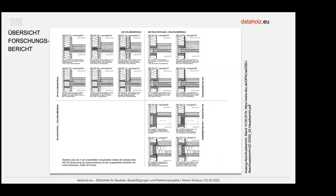Diese Übersicht ist im Forschungsbericht zu finden, mit den unterschiedlichen Quadranten. Unten steht zusammengefasst die Kriterien für die Bauteilauswahl, also zwei Nutzungseinheiten und 60 Minuten Feuerwiderstand zum Beispiel. Diese Übersicht ist in DataHolz noch nicht vorhanden, aber im Forschungsbericht downloadbar. Ich finde, das ist eine sehr gute Übersicht, weil man dann alle Bauteilfügungen, die es gibt, einfach mal im Überblick hat.